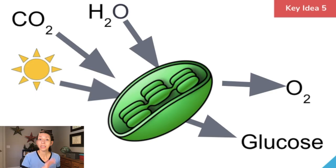Switching over to key idea 5, let's talk about photosynthesis. Photosynthesis occurs in the chloroplast of plant cells, and this is a specialized process where it takes energy from the sun and converts it to organic compounds — specifically glucose — so that we can produce ATP, or the energy for cells.